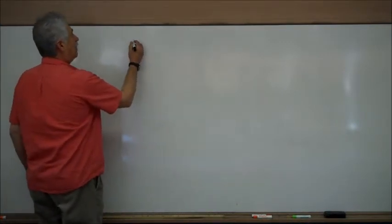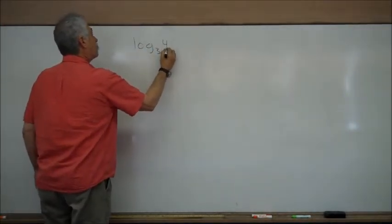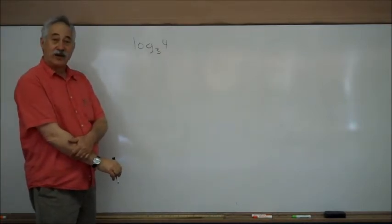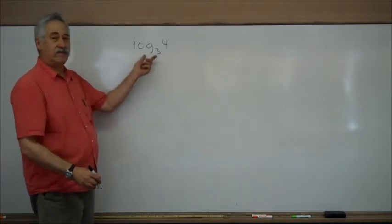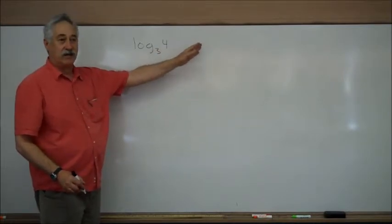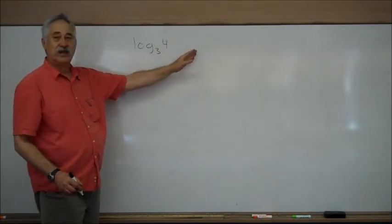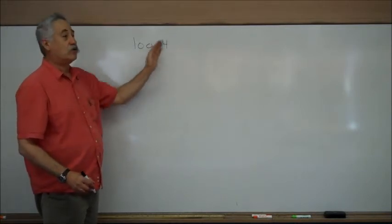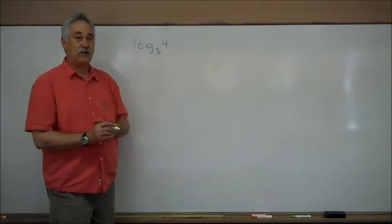Let's assume that some answer you got was written in this form: logarithm base 3 of 4. We wish to change it to a form where we can get an approximate answer using a calculator. Remember, this is an expression. When we work expressions, we work down. We don't use an equal sign and work off to the side. That equal sign will be occupied by something else when we're doing real mathematics. Simplification works down when you're working a problem.